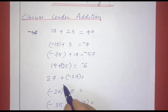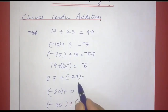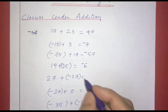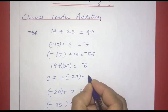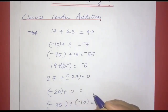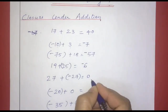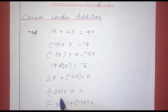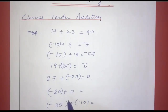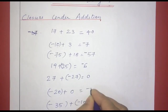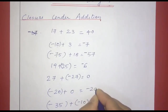Next one: 27 plus negative 27. One is positive and one is negative. The two numbers are the same, so we have 0. That is an integer. Next: negative 20 plus 0. The answer is negative 20. We have an integer.